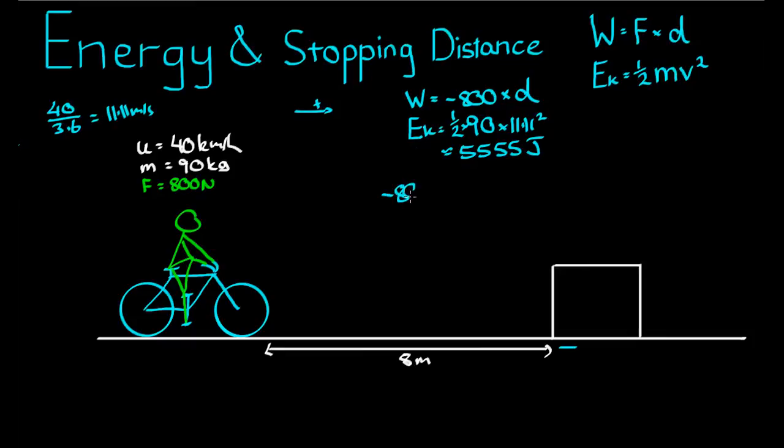So negative 800 times d, I'll have to change that to a positive, is equal to 5,555 j. The reason I changed that to a positive is otherwise I'd have to say negative 800 d plus 5,555 gives us final zero energy. But I'll change it to a positive, so I can have 5,555 on the other side. So the distance required to take away 5,555 joules worth of energy by using a force of 800 newtons is equal to 5555 divided by 800.